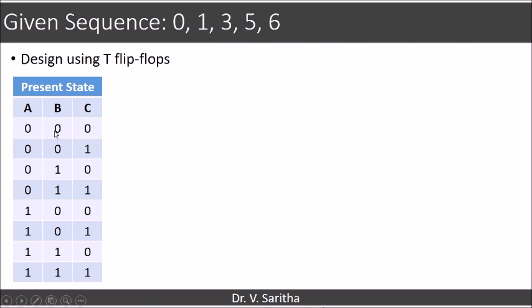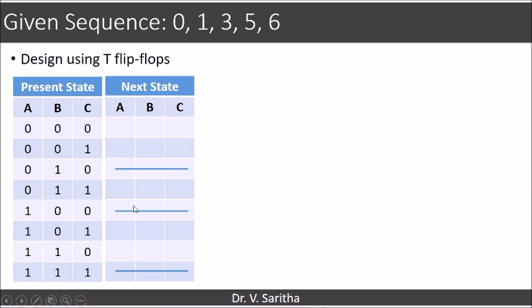So present state is considered as 0 to 7. But if you consider the sequence we don't have 2, 4 and 7 here. So in the next state for 2, 4, 7 we will give blank.